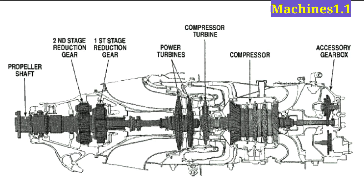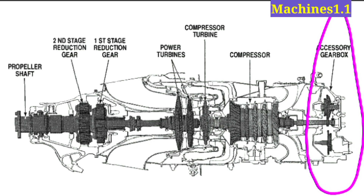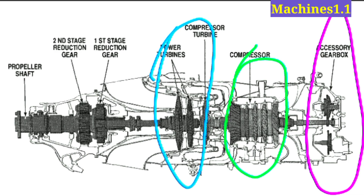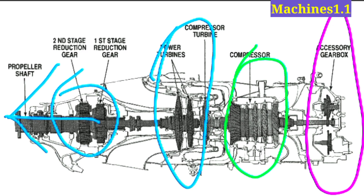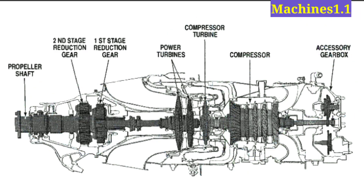Here is the engine layout. First, the accessory gearbox is installed at the front. Then the compressor section follows. In this engine, two turbines are installed: the compressor turbine and the power turbine. Then there is the reduction gearbox and the power shaft, which delivers power to the propeller or rotor of the aircraft. This area takes power from the compressor through its shaft.